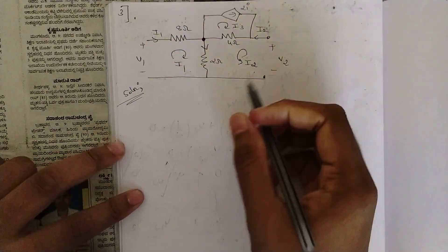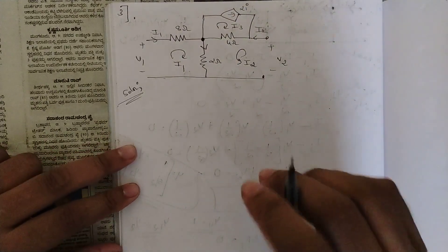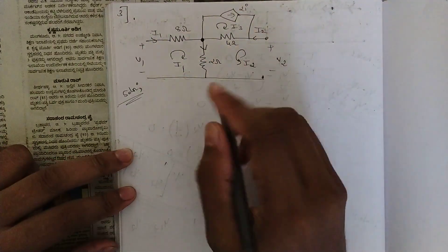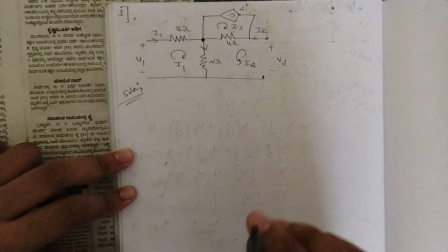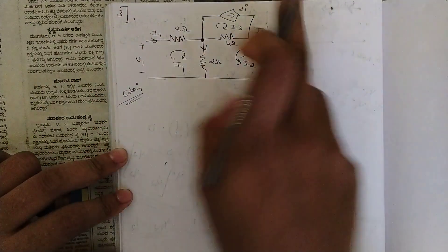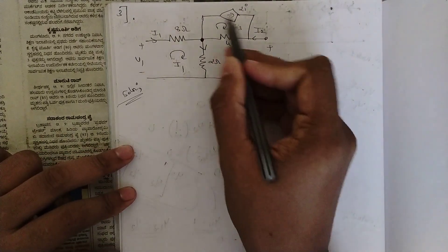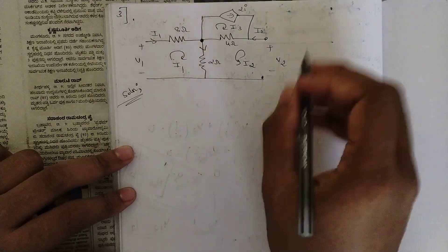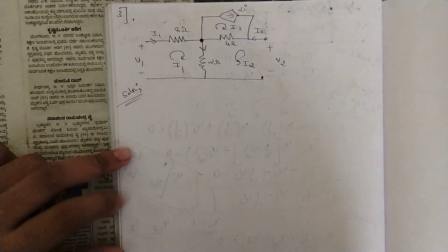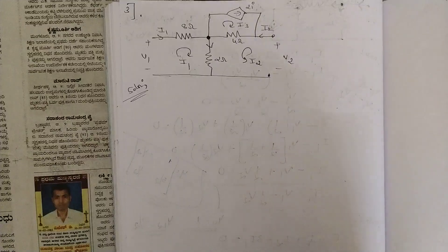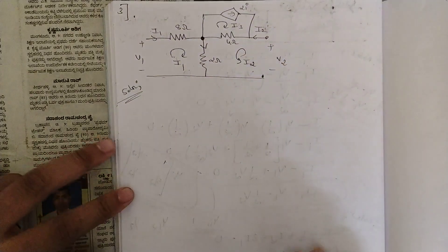This is the next problem. The circuit looks complex but it is very easy. We will solve this using mesh analysis because we have direct loops here. You should observe the network carefully to determine which method is applicable. You could also solve this using node analysis since we have one single node with four branches, but mesh analysis makes this problem easier.